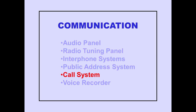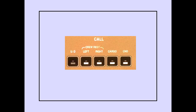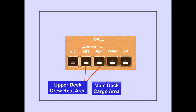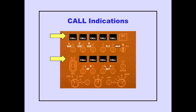Now let's discuss the flight deck call system. The pilot's call panel is located on the aisle stand. An incoming call from an upper deck crew rest area, the main deck cargo area, or the nose wheel well will illuminate the respective switch and sound a chime on the flight deck. Incoming cell calls, ACARS, ground crew, main deck cargo area, and upper deck crew rest area calls illuminate the respective call indication on the audio panel.